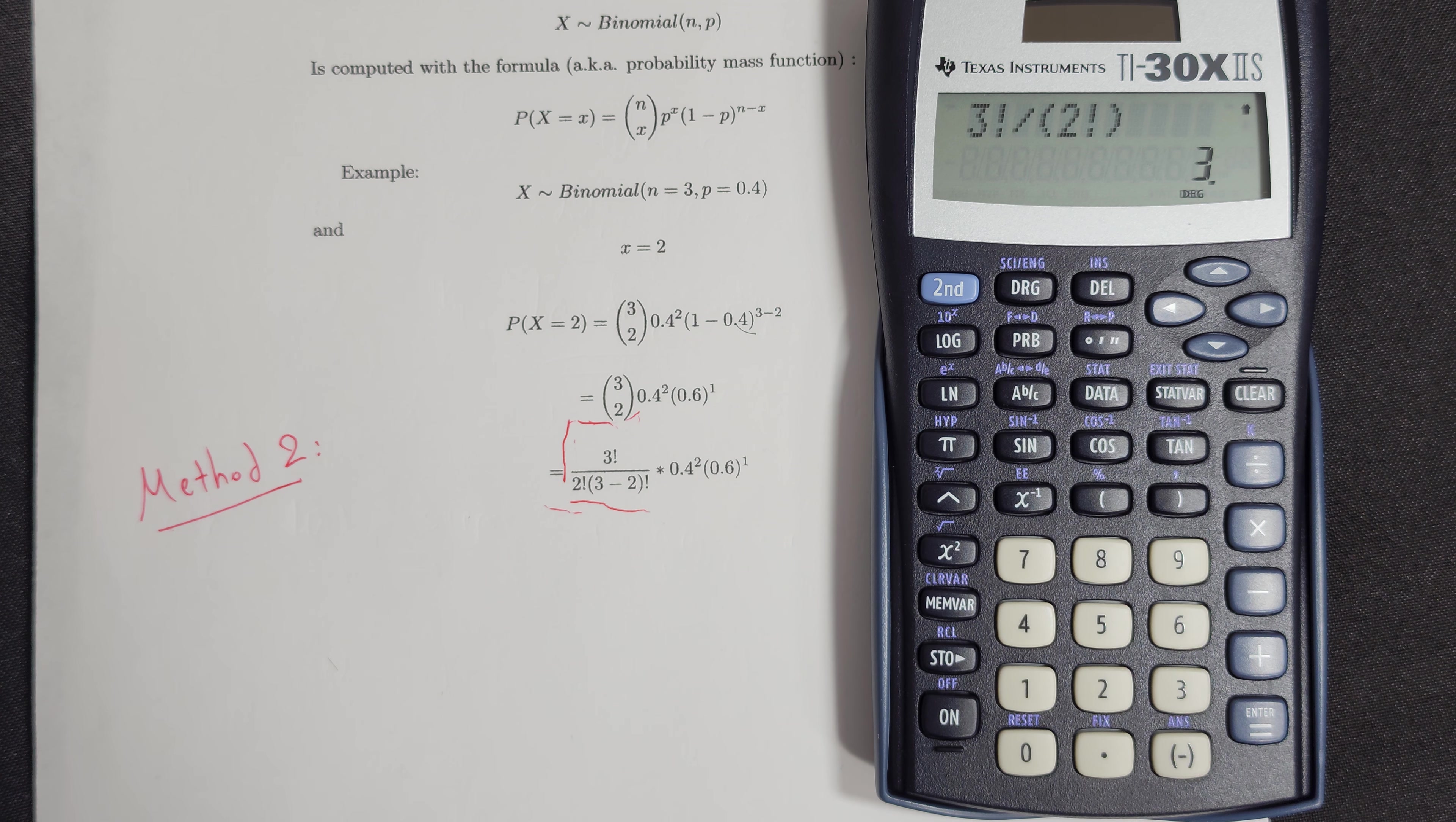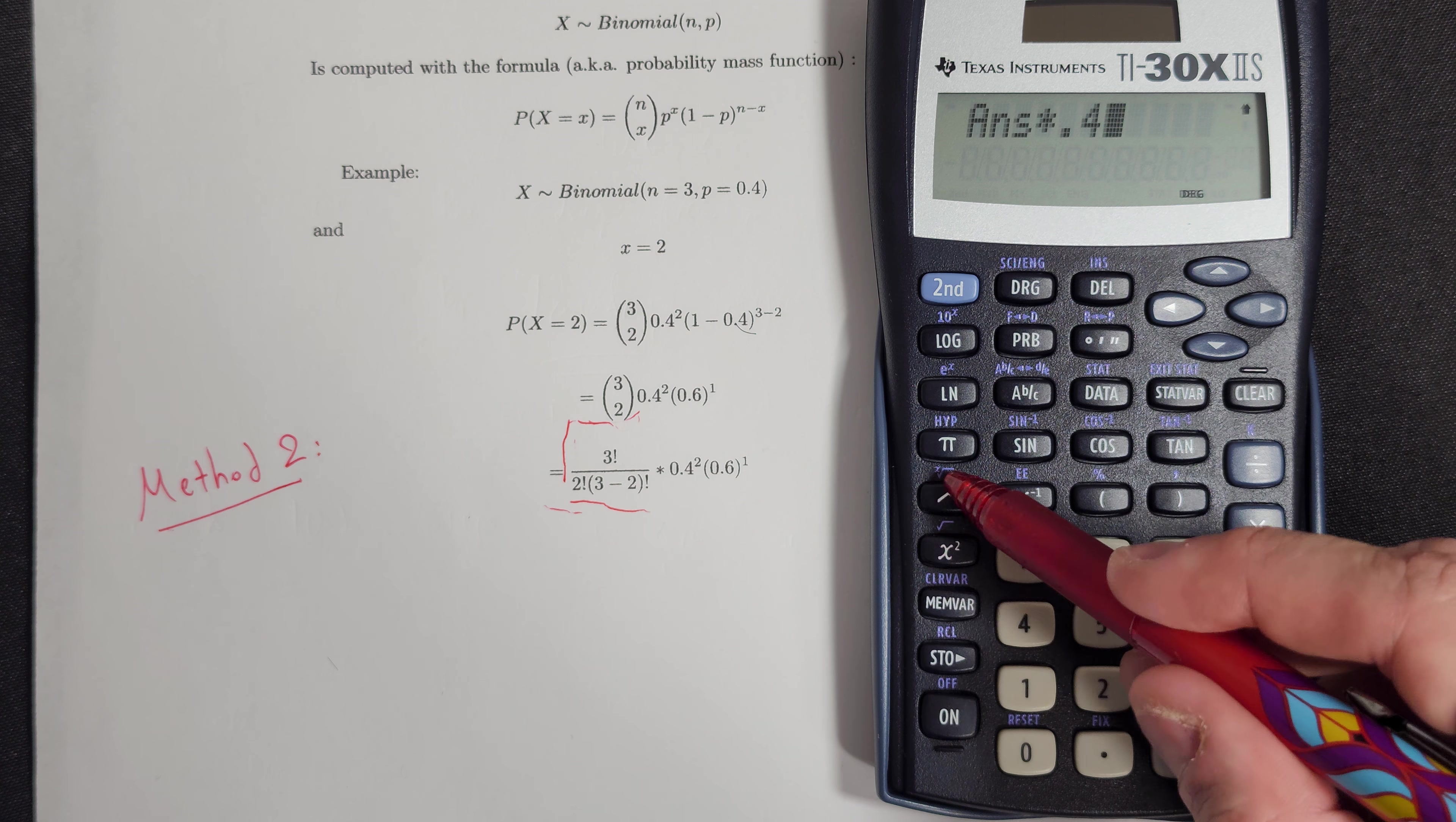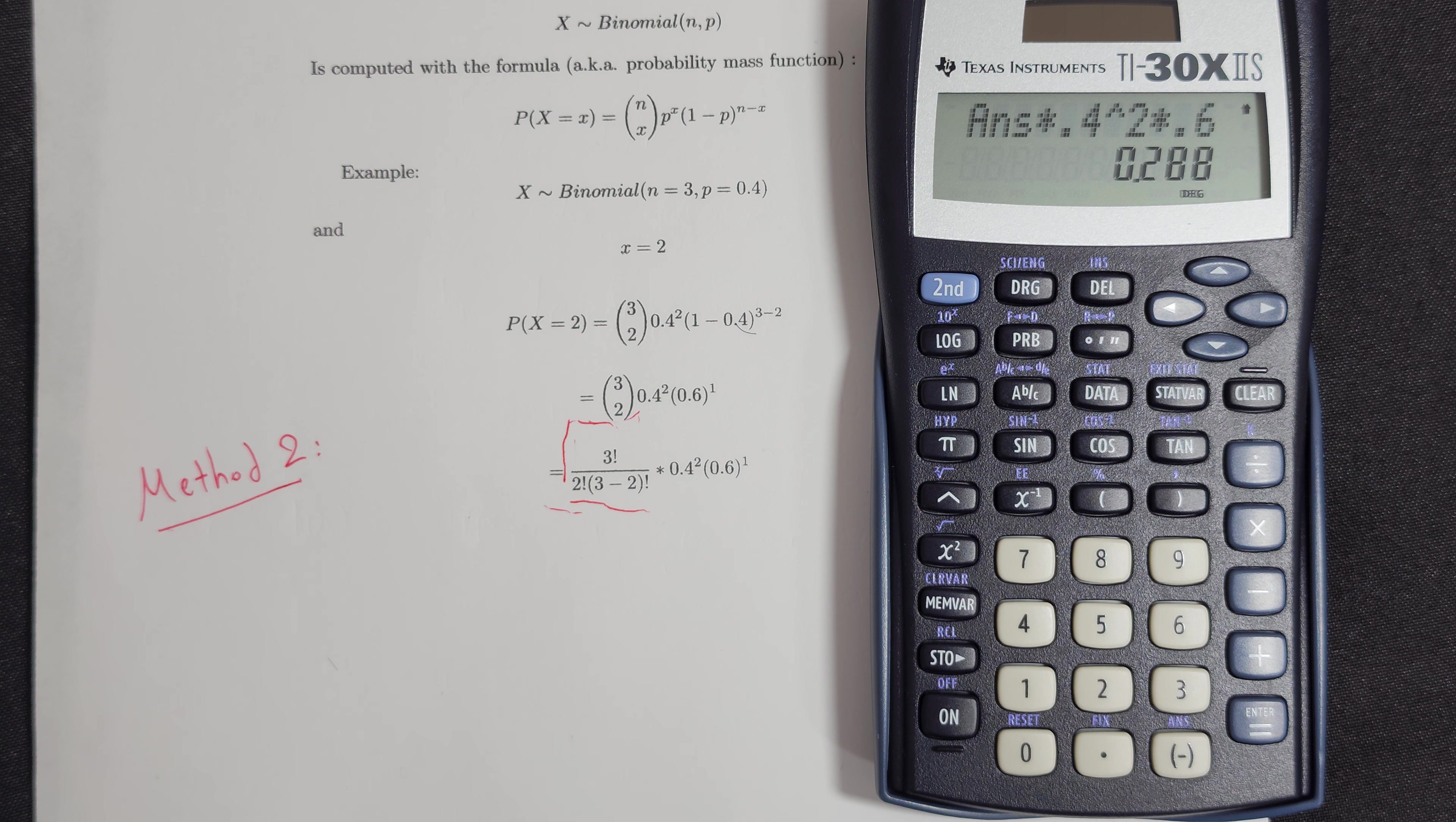So this part of 3 means that there are 3 ways to choose the object from a set of 3 total objects. So we have to multiply by 0.4, which is the second part, 0.4 squared, and then multiply by 0.6. And as you can see, we found exactly the same result as the previous method.